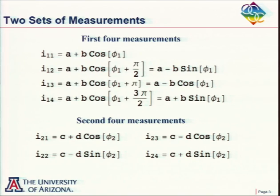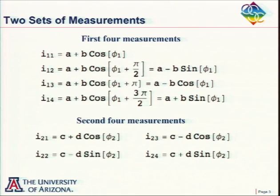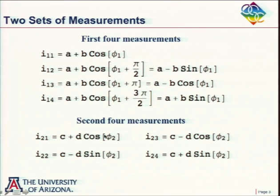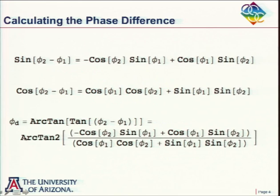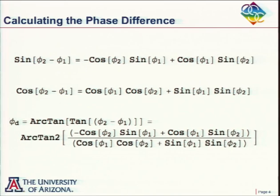Then we're going to deform the surface and repeat these four measurements. Now instead of the phase being phi_1, we write it as phi_2, a function of position. What we want to determine is phi_2 minus phi_1. We note that the sine of (phi_2 minus phi_1), from a trig identity, is negative cosine(phi_2) times sine(phi_1), plus cosine(phi_1) times sine(phi_2). And a similar expression for the cosine of (phi_2 minus phi_1): cosine(phi_1) cosine(phi_2) plus sine(phi_1) sine(phi_2).